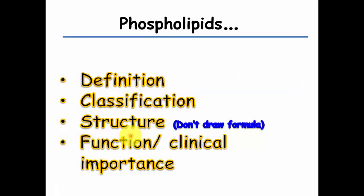Summarizing: when we talk about phospholipids, we must cover the definition of phospholipids, the classification of phospholipids, and the structure - knowing that it contains phosphatidic acid, ethanolamine, and so on. We don't need to draw the full chemical formula, but we must know the components. And lastly, the functions and clinical importance of phospholipids - this is very important.